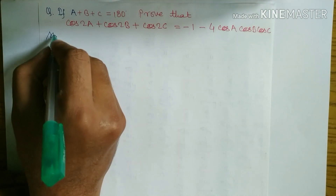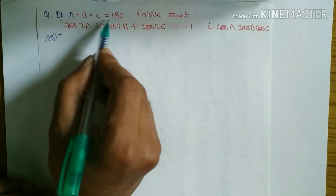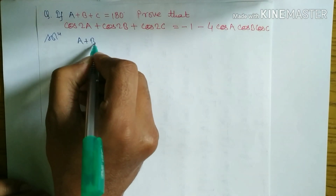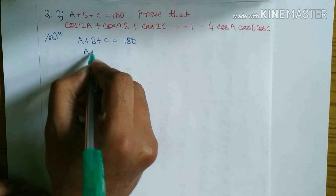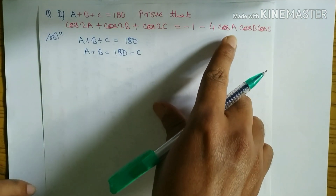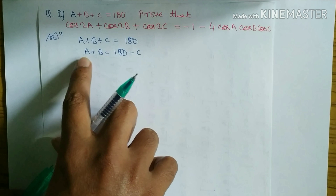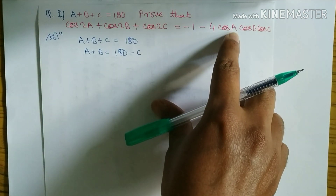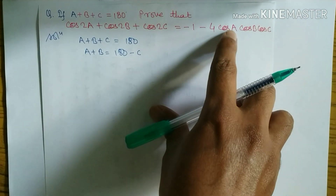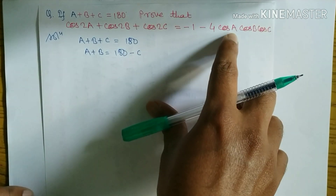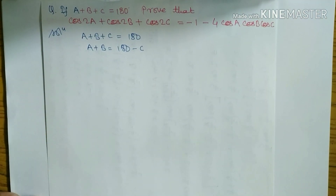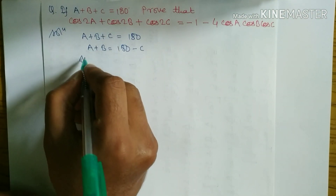Let's look at the solution. One condition is given: if A plus B plus C equals 180 degrees, then A plus B equals 180 minus C. Now look at the RHS — we have A, B, C there. In the previous video when it was A/2, B/2, C/2 we had to divide by two. When it is 2A, 2B, 2C we multiply by two. But here it is just A, B, C so no need to divide or multiply — just take sine and cosine of both sides.